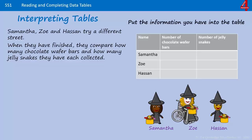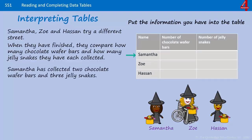We need to put the information in the table as we read it. Samantha has collected two chocolate wafer bars so we can put two under the column for chocolate wafer bars, and three jelly snakes so we can put three under the column for number of jelly snakes.